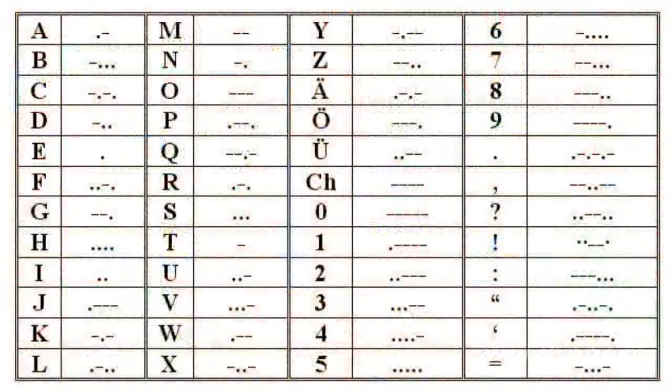A digital signal is a signal processed in a certain way and converted into digits. Usually these digital signals are related to actual analog signals. To simplify this, let us take the principle of information transfer using Morse code as an example of a digital signal.